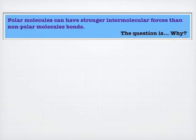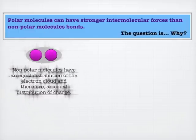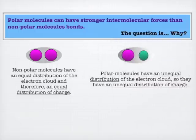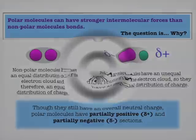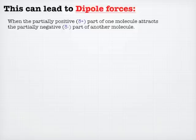Nonpolar molecules have an equal distribution of the electron cloud and therefore equal distribution of charge, so not much place to interact. But when you have a polar molecule, you have an unequal distribution of charge — either through electronegativity differences, unbalanced formal charges, geometry, or a combination of all of those. Since you have an unequal distribution, you end up with partially positive and partially negative parts of the molecule, with the partially negative part tending to be the more electronegative part. Since this is a permanent dipole, these dipoles have the ability to interact with each other through something called dipole-dipole forces.